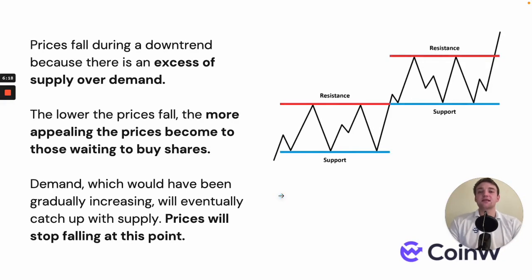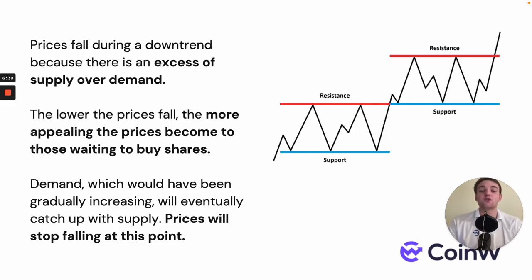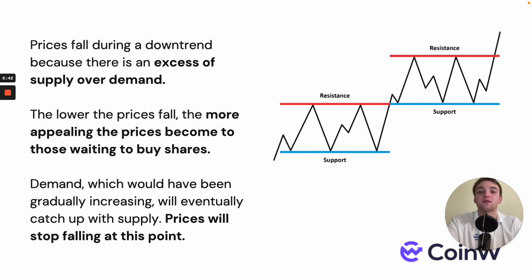During a downtrend, because there's excessive supply over demand, the lower the price falls the more appealing it becomes for those wanting to buy. Demand, which would have been gradually increasing, will eventually catch up to supply and price will stop falling. If you look at the graph on the right, you can see that on the support line price touches it three times — that zone is called the demand zone, where people want to buy at those prices.